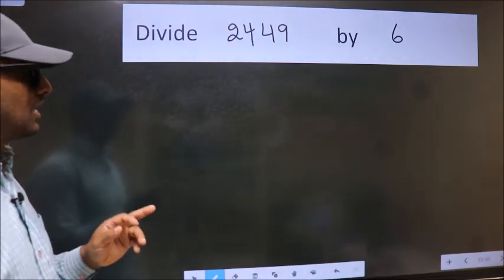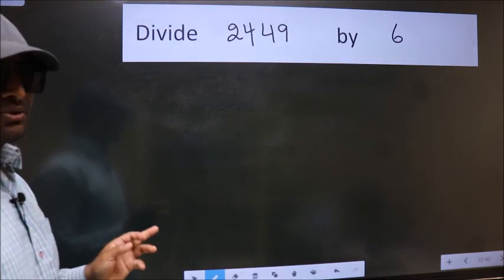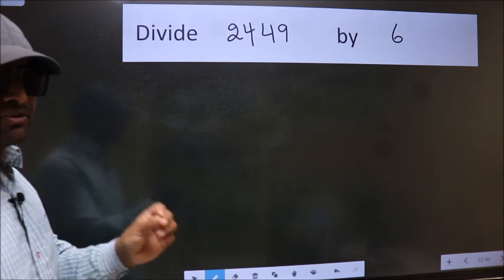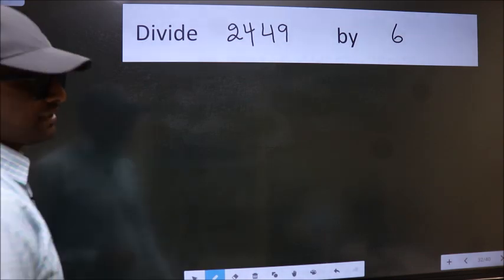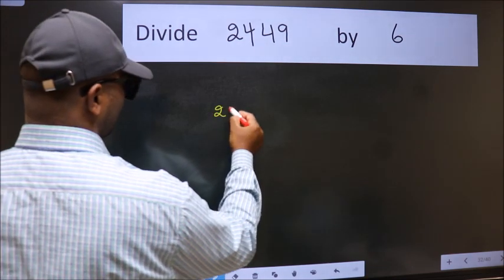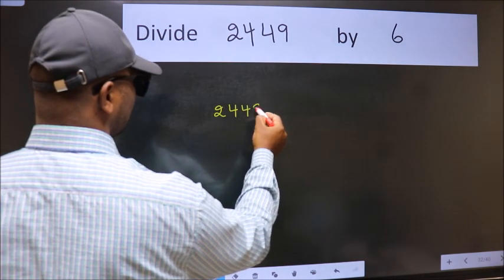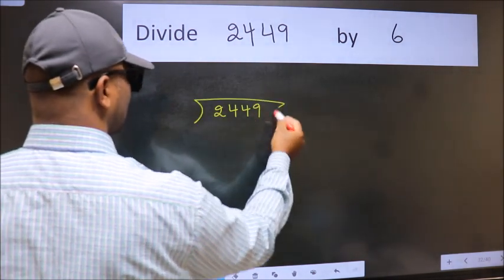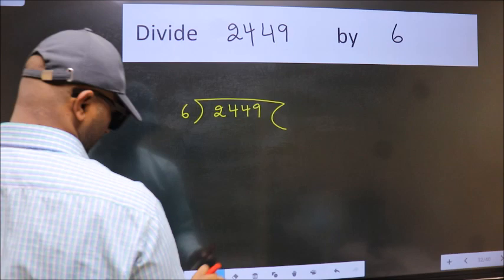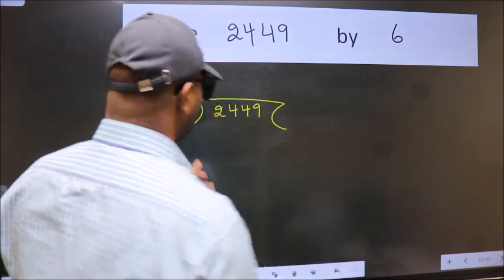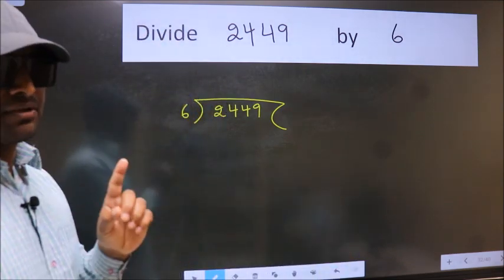Divide 2449 by 6. To do this division, we should frame it in this way: 2449 here, 6 here. This is your step 1.